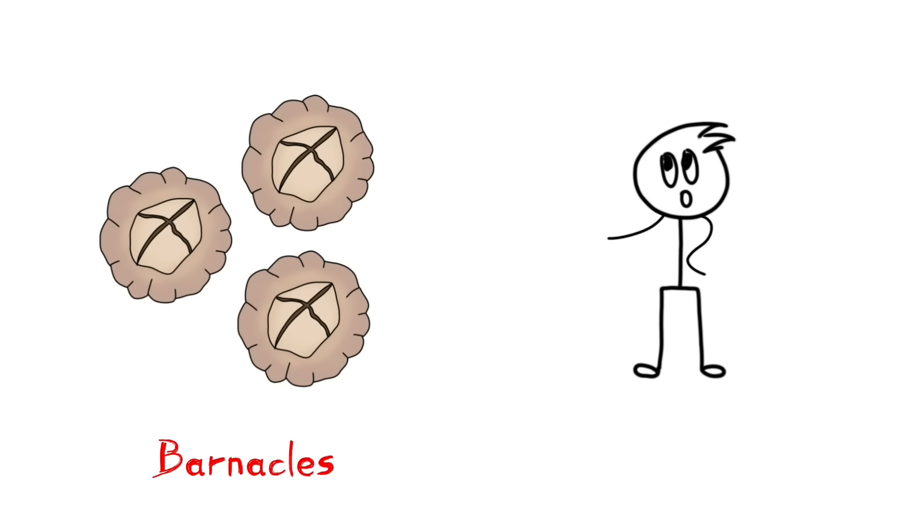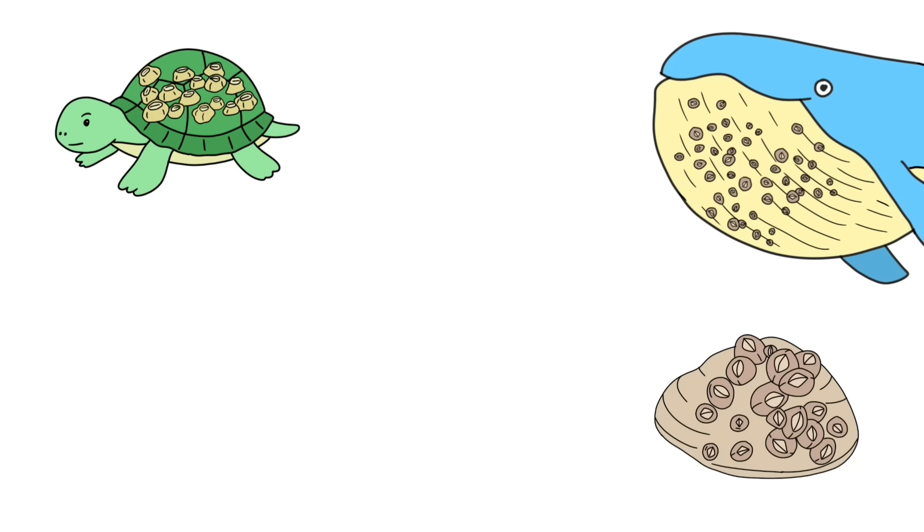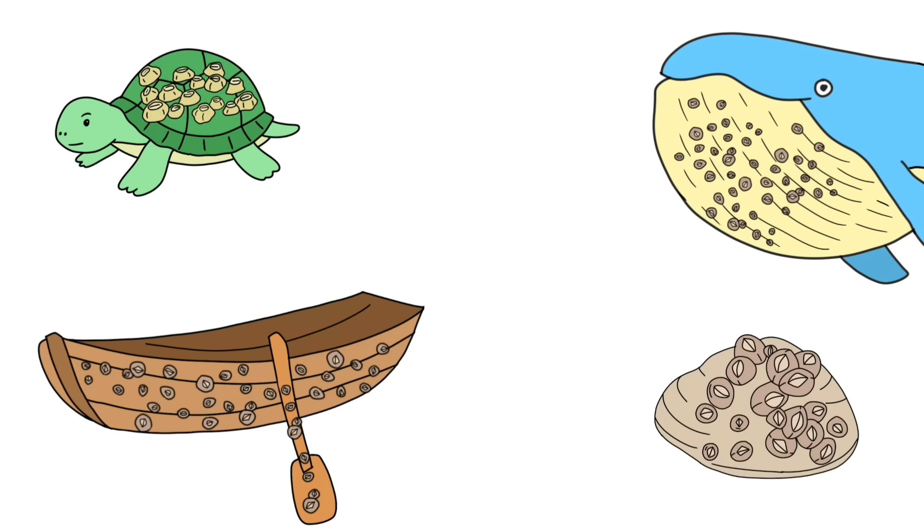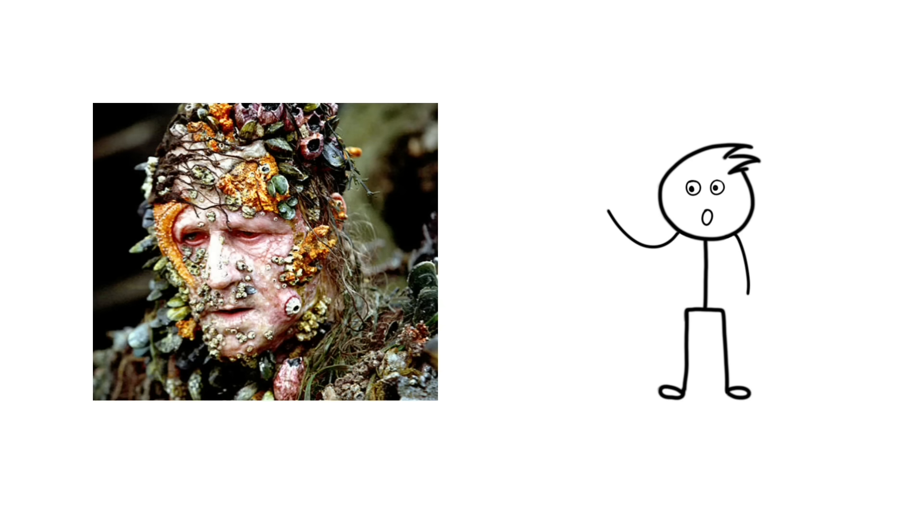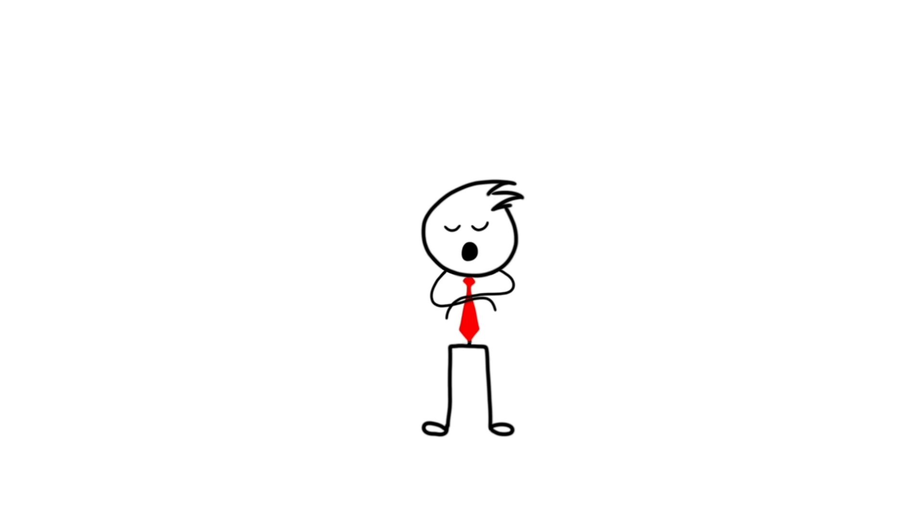These are barnacles, and they are found almost everywhere, even attached to whales, turtles, rocks, and boats. Every member of the Flying Dutchman has barnacles on them. And this is also a barnacle if you have played Valheim. So, you can think of them as multiverse-level creatures.